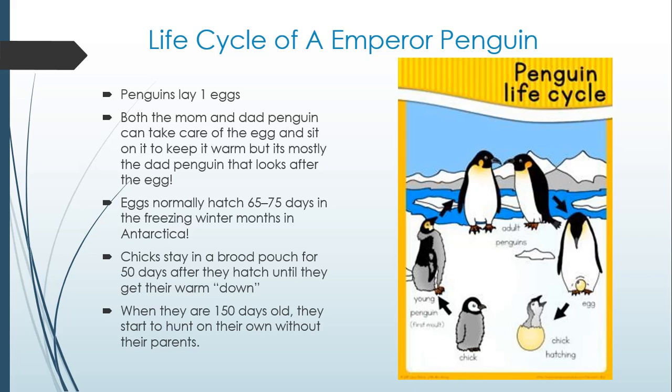Eggs normally hatch 65 to 75 days after they've been laid, normally in the freezing winter months in Antarctica. Because of that, chicks stay in a brood pouch — if you look at the picture, it's where the penguin's feet are, there's a little pouch and the chick lives in between the feet. The baby penguin has to be on the feet because if it touches the snow it'll get cold. The chicks stay in the pouch for about 50 days after they hatch, until they get their warm down feathers.